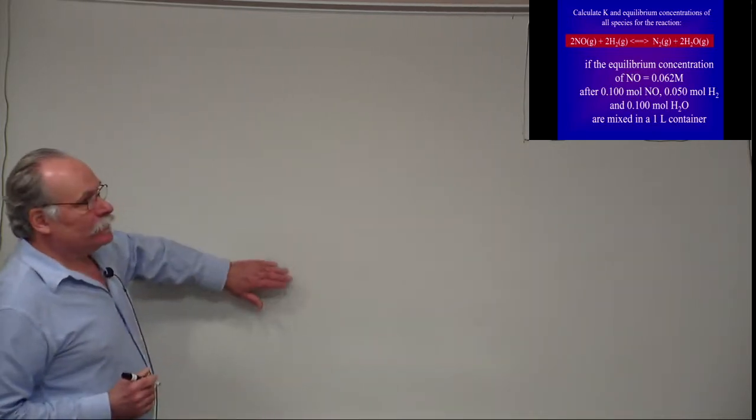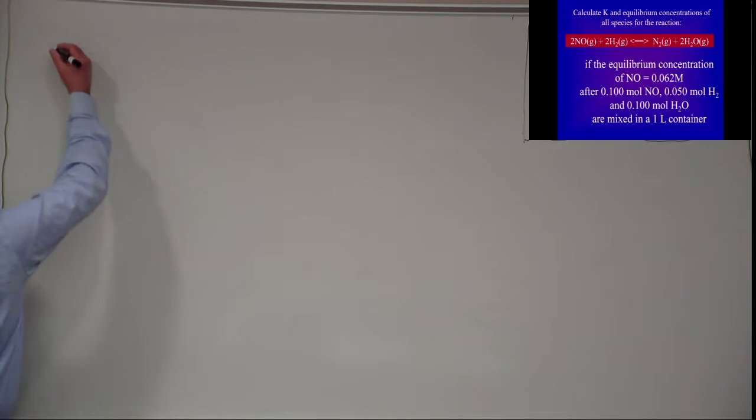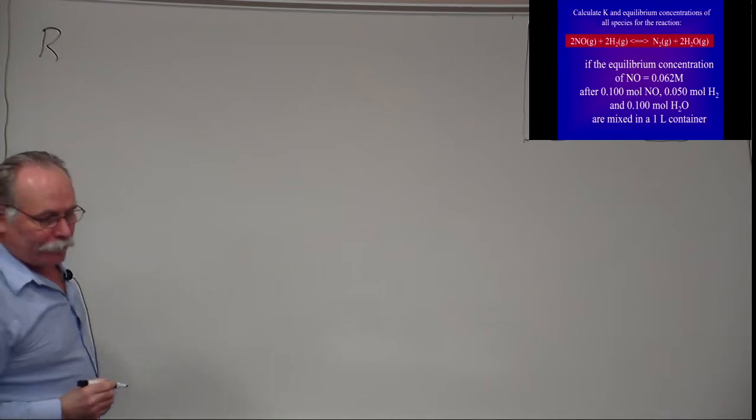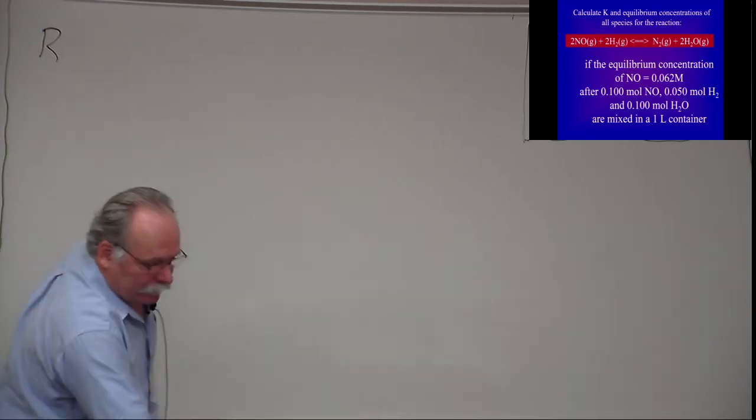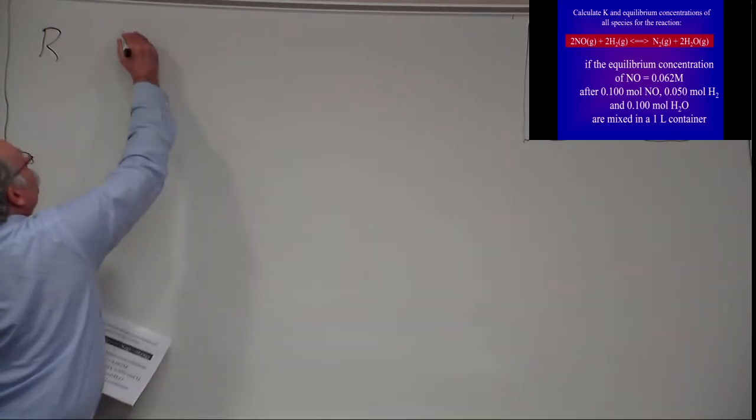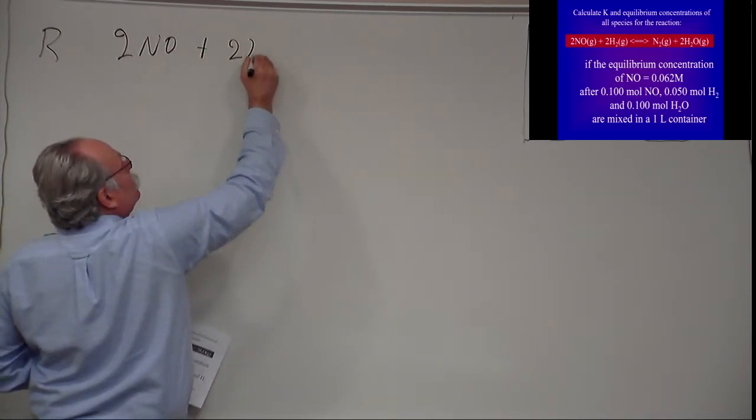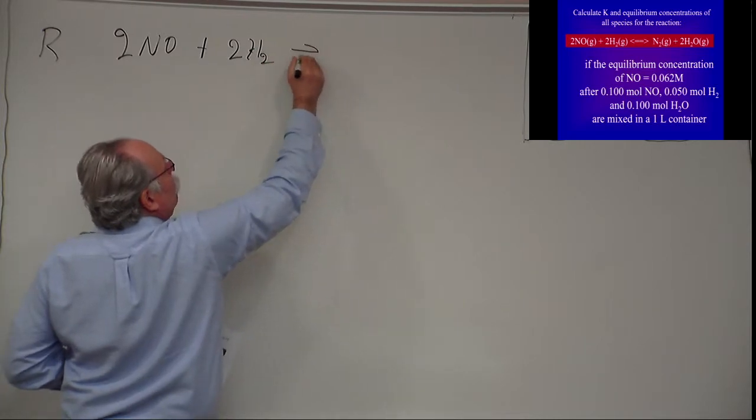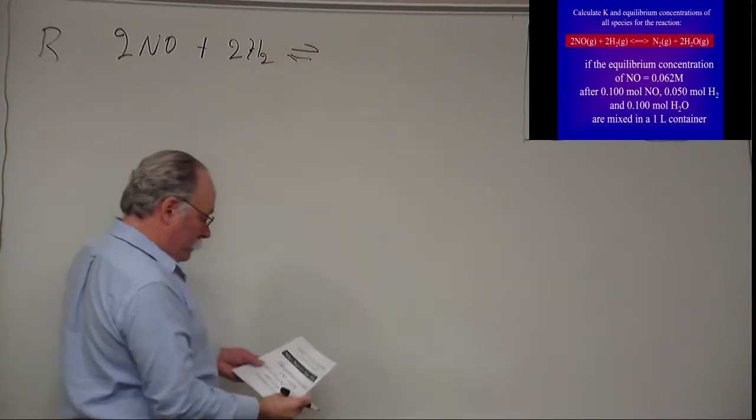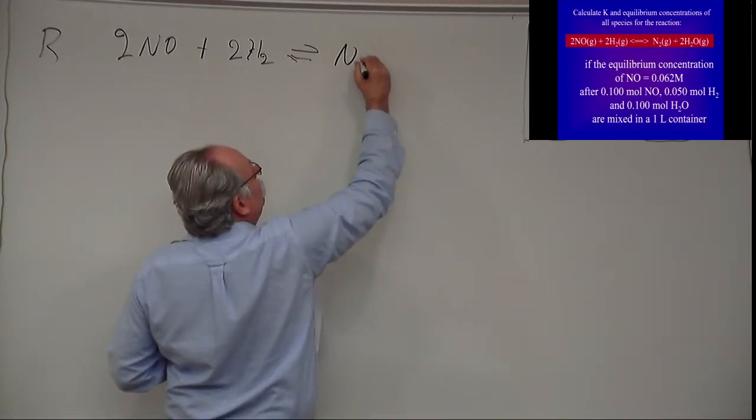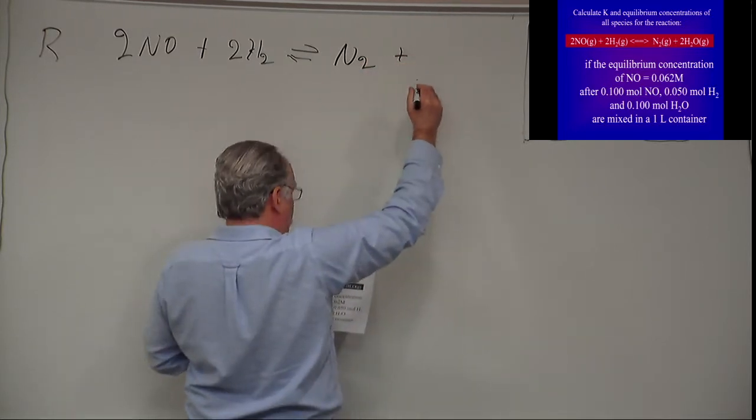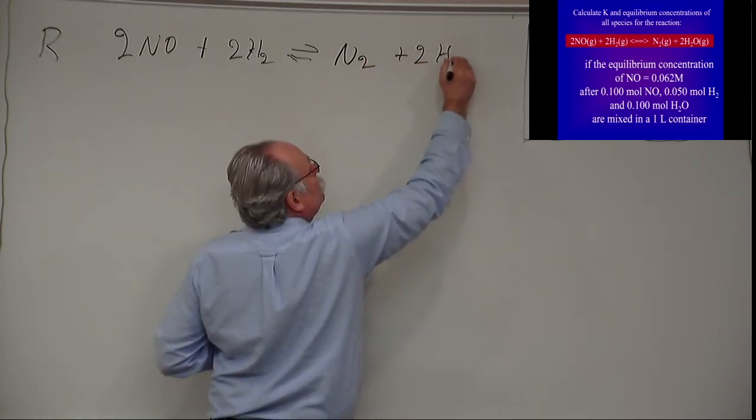So in all of these calculations we use what I call a RICE diagram, which is you first start off with the reaction that you're describing. So that would be the R for reaction, and in this problem here, our reaction is 2NO plus 2H2 which may form or may be formed by the reaction of N2 plus 2H2O.